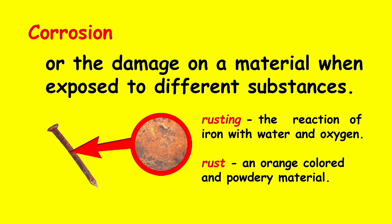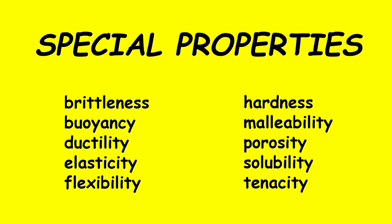That is all about general properties. Now let's proceed to special properties, or those characteristics that are based on the object's internal structure. There are 10 special properties: brittleness, buoyancy, ductility, elasticity, flexibility, hardness, malleability, porosity, solubility, and tenacity.